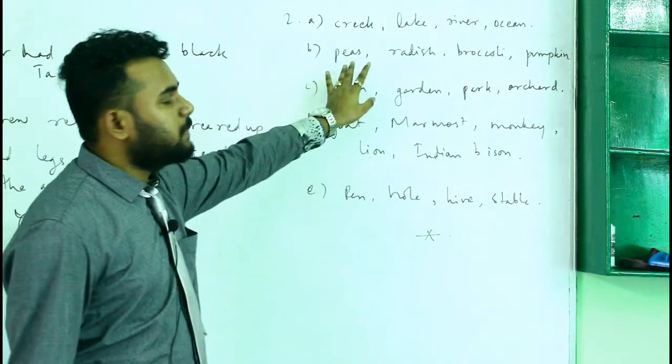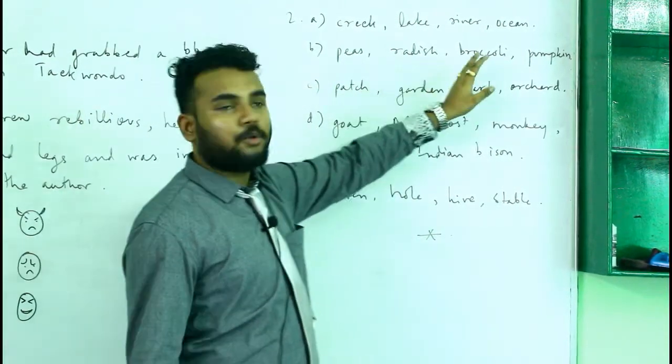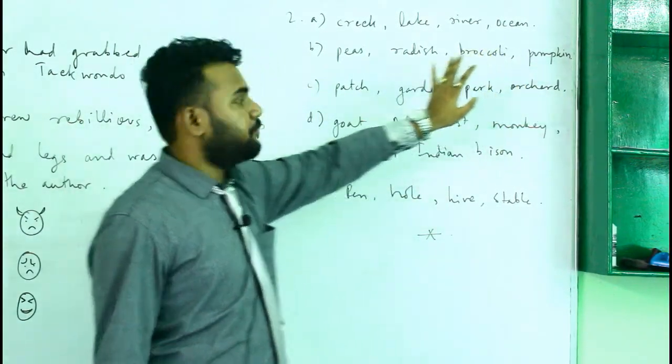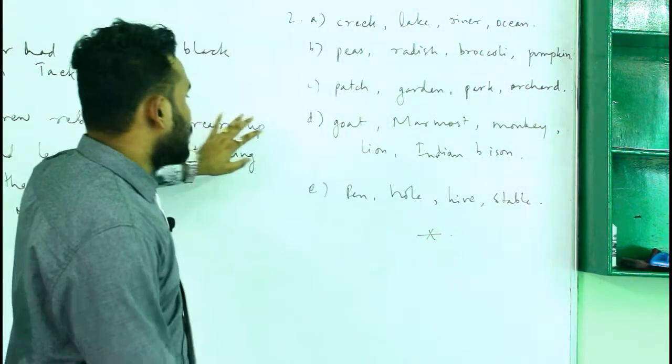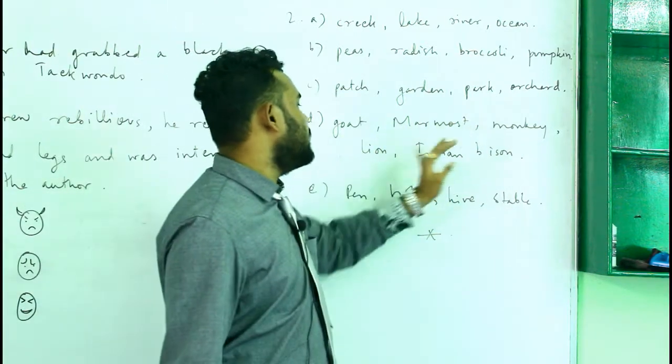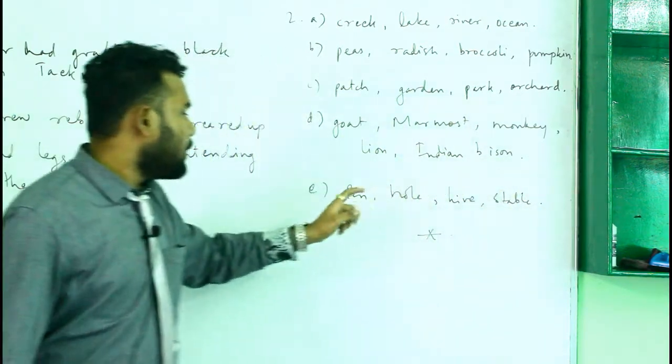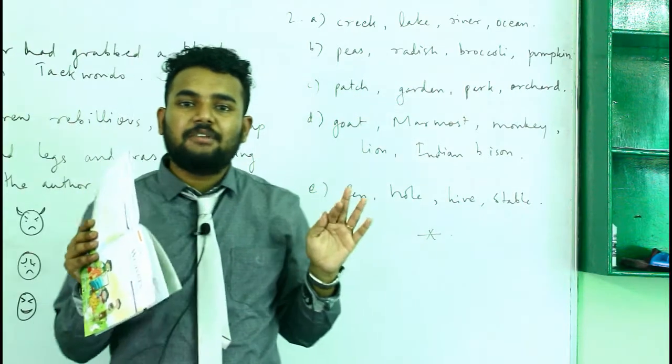Then radish, then broccoli, then bigger, then biggest pumpkin. Patch, garden, park, and orchard means big garden.